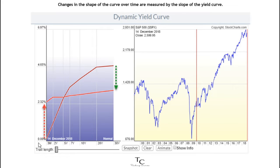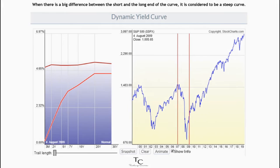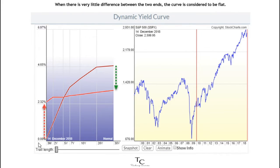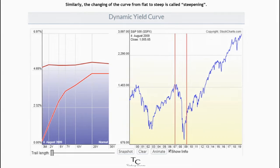Changes in the shape of the curve over time are measured by the slope of the yield curve. When there is a big difference between the short and the long end of the curve, it is considered to be a steep curve. When there is very little difference between the two ends, the curve is considered to be flat. The changing of the curve from steep to flat is often referred to as flattening, and the changing from flat to steep is called steepening.